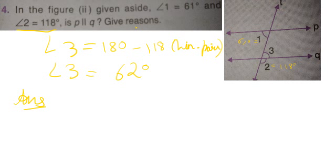They are unequal. Angle 1 is unequal to angle 3. This means that our lines are not parallel.